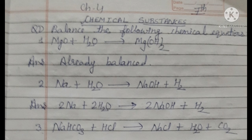The first chemical equation is MgO (magnesium oxide) plus H2O (water) reacting to form Mg(OH)2 (magnesium hydroxide). If you calculate the number of atoms of reactants and products, we find they are equal: magnesium 1-1, oxygen 2-2, and hydrogen 2-2 on both sides. So it is already balanced.